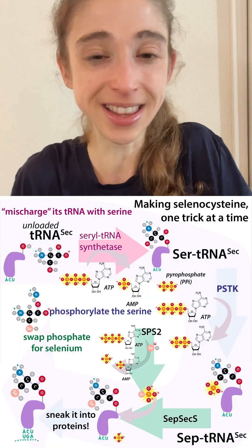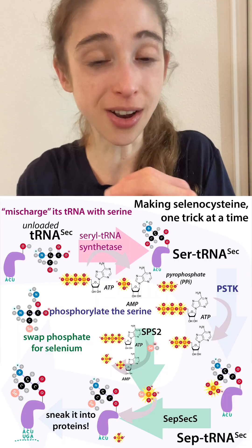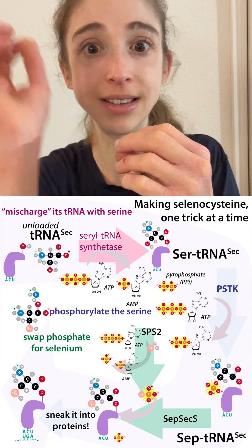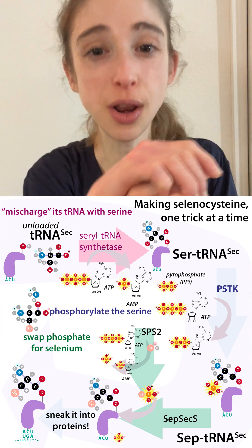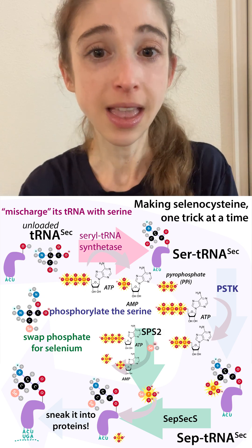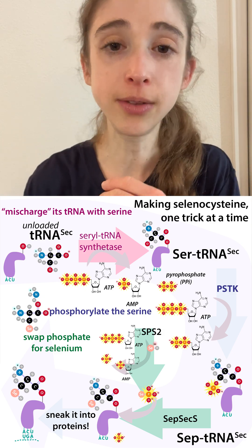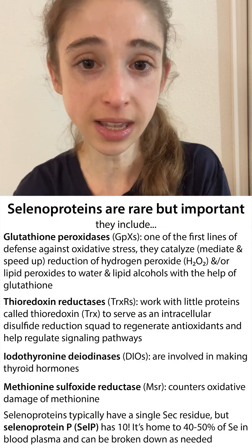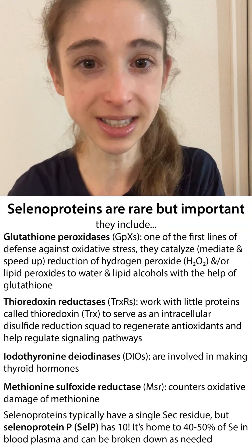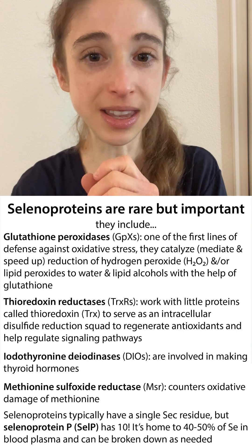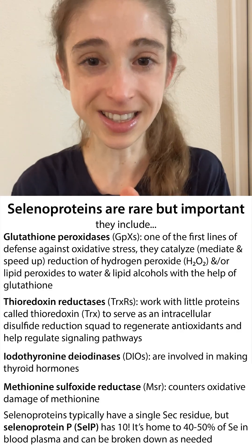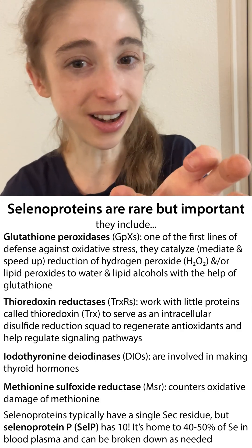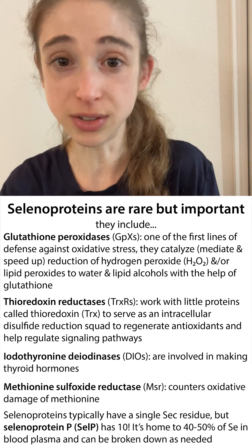In order to get the selenocysteine latched onto that tRNA, you first load the tRNA with serine and then swap out the oxygen of serine with selenium. That selenium is typically coming from being cleaved off of a protein called selenoprotein P, or SelP, which has 10 different selenocysteine residues that can be removed as needed in order to make fresh selenocysteine tRNA that can then get incorporated into proteins.